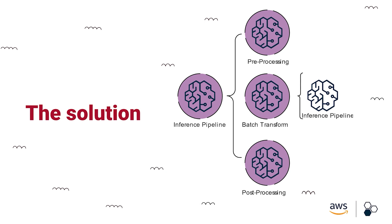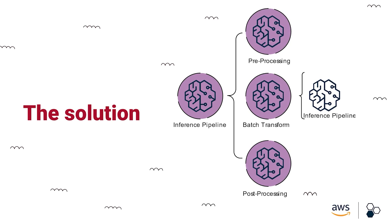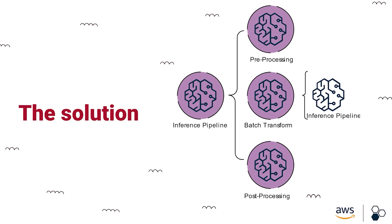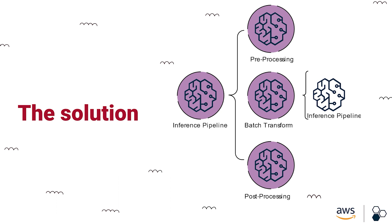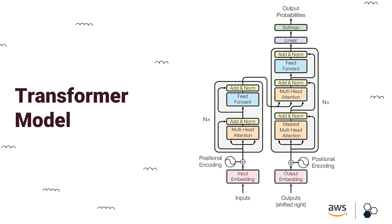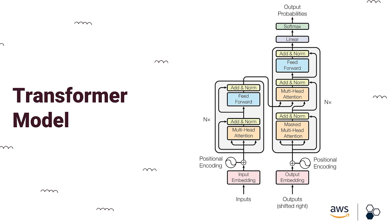The only component you need to change to retrofit this to a different business use case is the inference component, which comprises three separate parts: pre-processing, inference, and post-processing. The pre-processing and inference components go hand-in-hand — pre-processing prepares the data for the model. The inference component contains what's called a transformer model. Back in 2017, a seminal research paper called 'Attention Is All You Need' introduced the transformer model architecture, and most of the solution's value is enabled by two concepts: the transformer model and the concept of transfer learning.